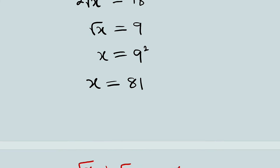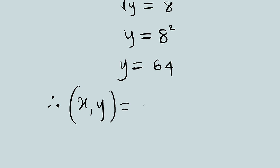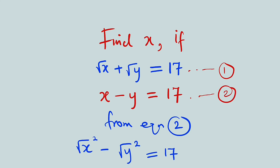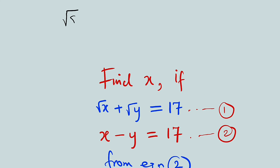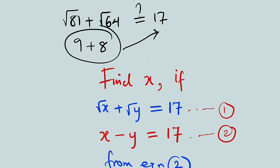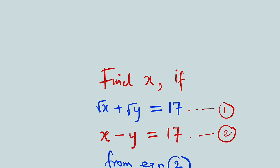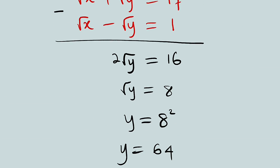And hence, the value of x is 81 while the value of y is 64. We can test in the main equations to verify. Our first equation was square root of x plus square root of y equal to 17: square root of 81 plus square root of 64 equals 9 plus 8, which equals 17. True. For the second equation, 81 minus 64 equals 17. Definitely true. And hence the values of x and y are 81 and 64 respectively.